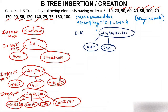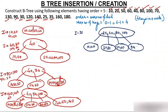After inserting 35, the full tree structure is: root has 25, 40, 70, 100. Left of 25: {10, 20}. Between 25–40: {30, 35}. Between 40–70: {50, 60}. Between 70–100: {80, 90}. After 100: {120, 130, 140}.